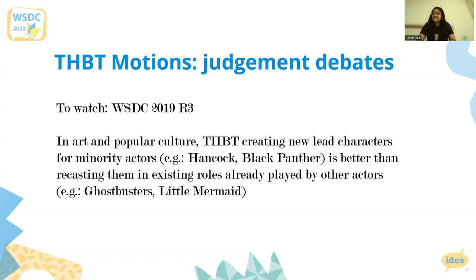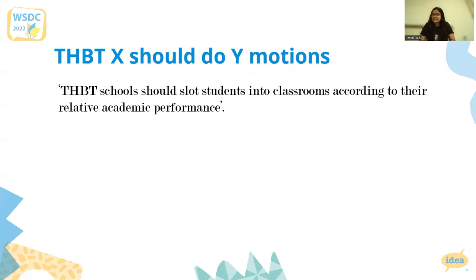The second type of motions is 'This House Believes That X should do Y.' These may need model-like setups depending on if there are multiple ways to do Y. However, it is important to remember that you have to prove that X is likely to do Y exactly in the manner described by your team. For example, if the motion is 'This House Believes That schools should slot students into classrooms according to their relative academic performance,' you could do it either by their overall average or based on separate subjects.